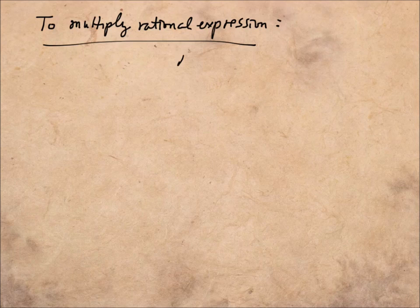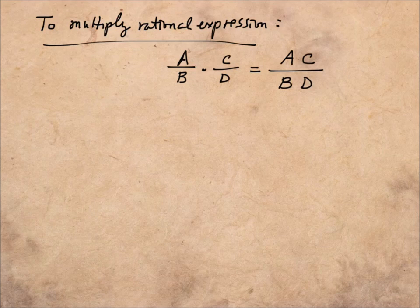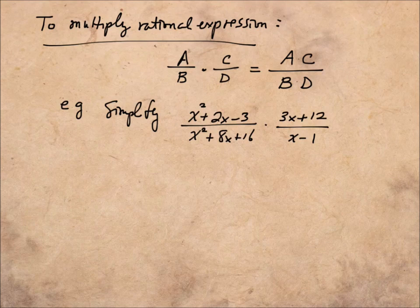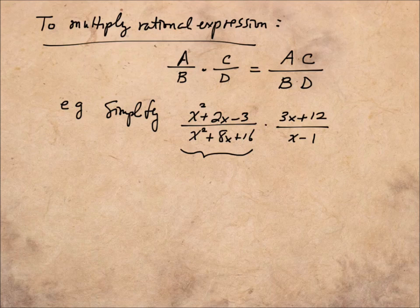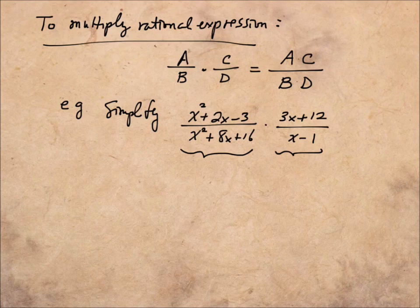Now we're ready to look at how to multiply rational expressions. The rule is: if we have A over B times C over D, we simply multiply the numerators A and C together, multiply the denominators B and D together, and write them as a single fraction. For our example, we want to multiply x squared plus 2x minus 3 over x squared plus 8x plus 16 by 3x plus 12 over x minus 1. The first step is always to break down each expression into its factored form.